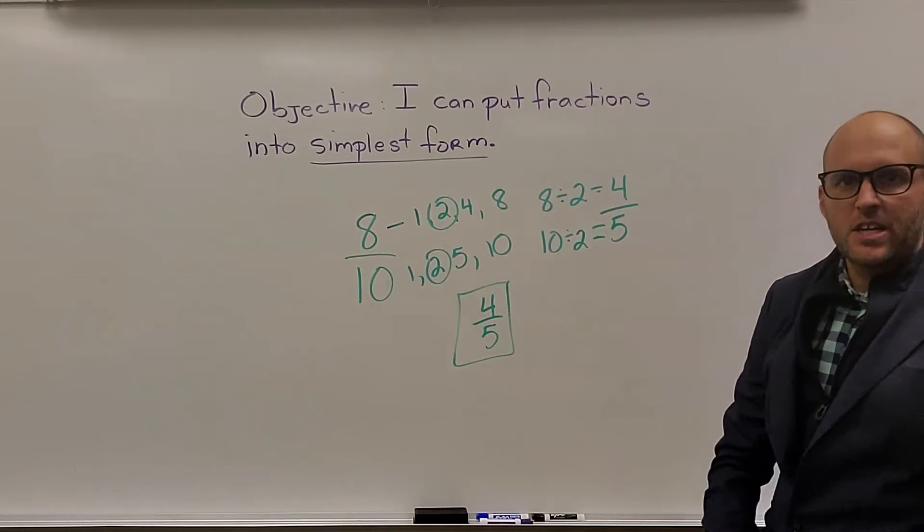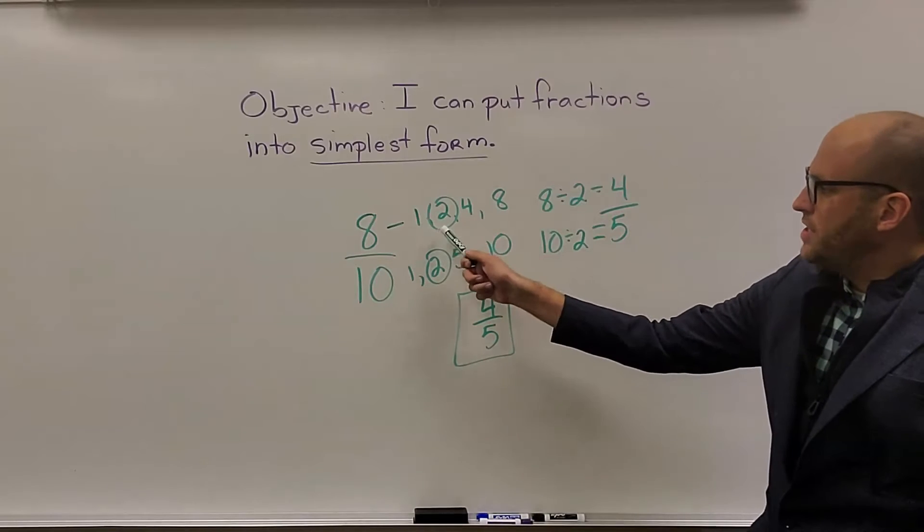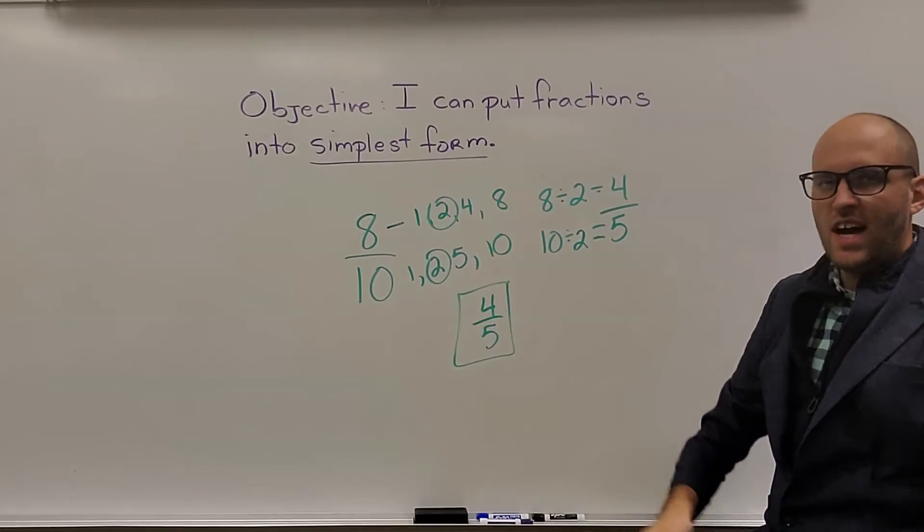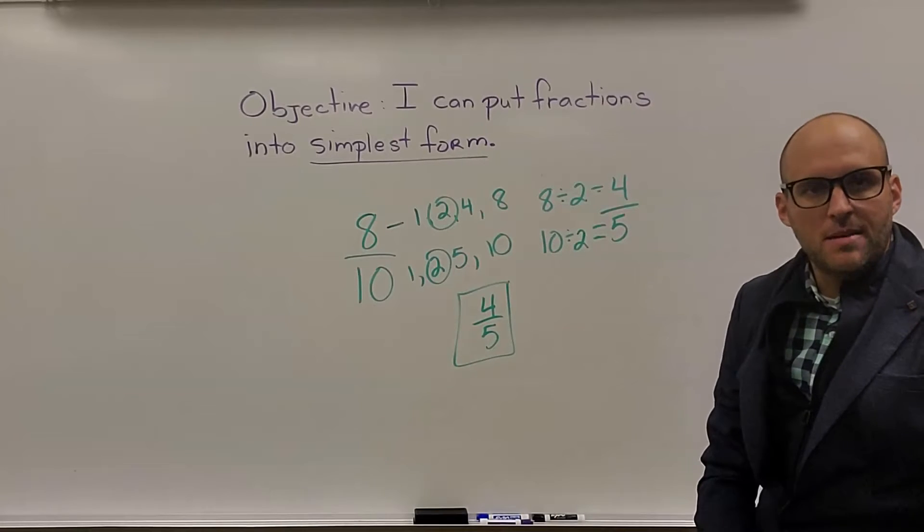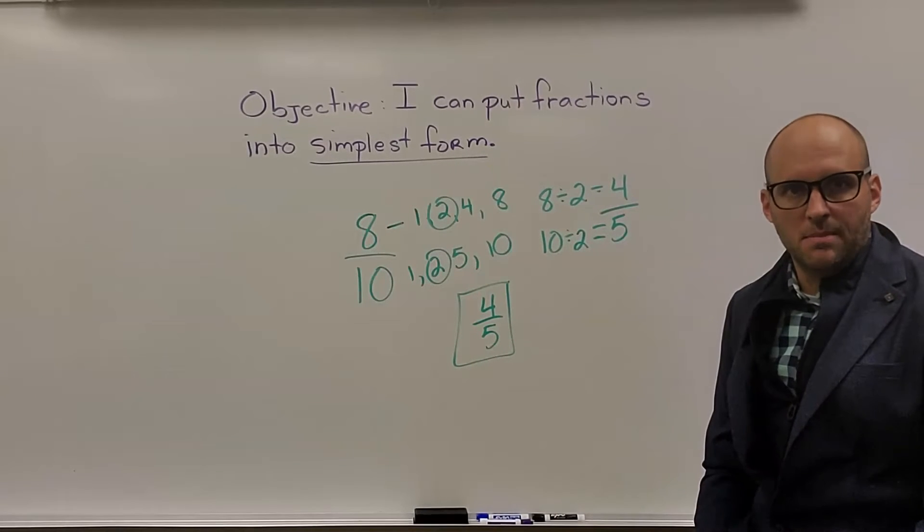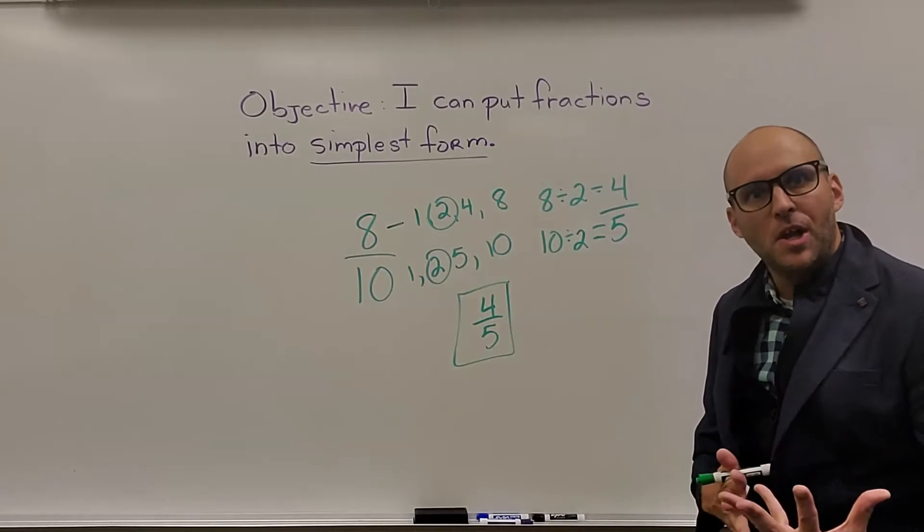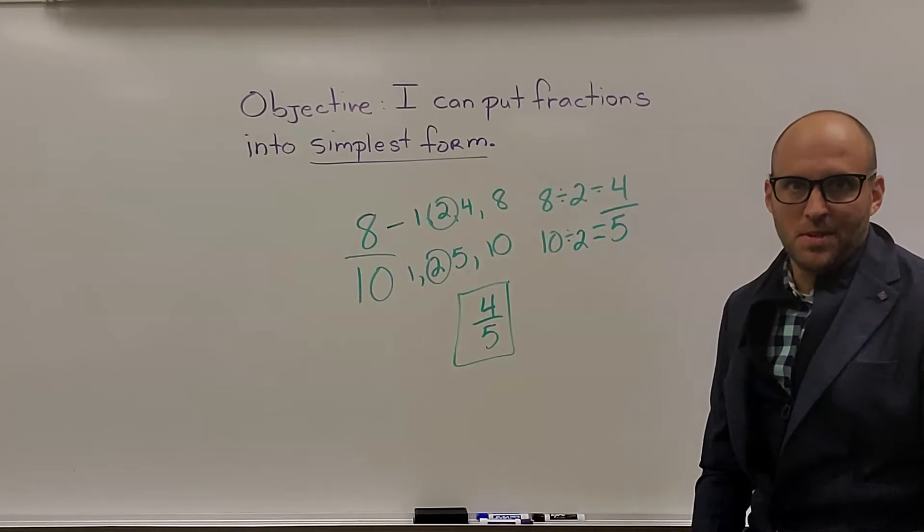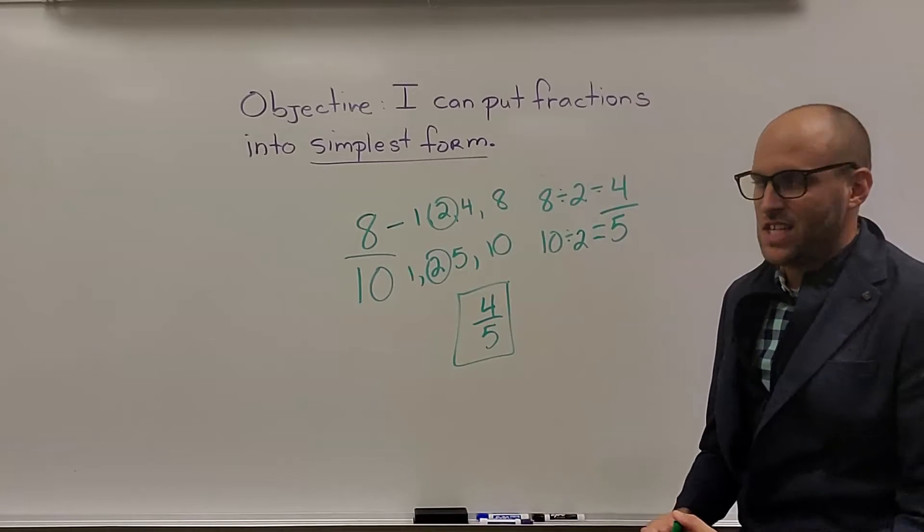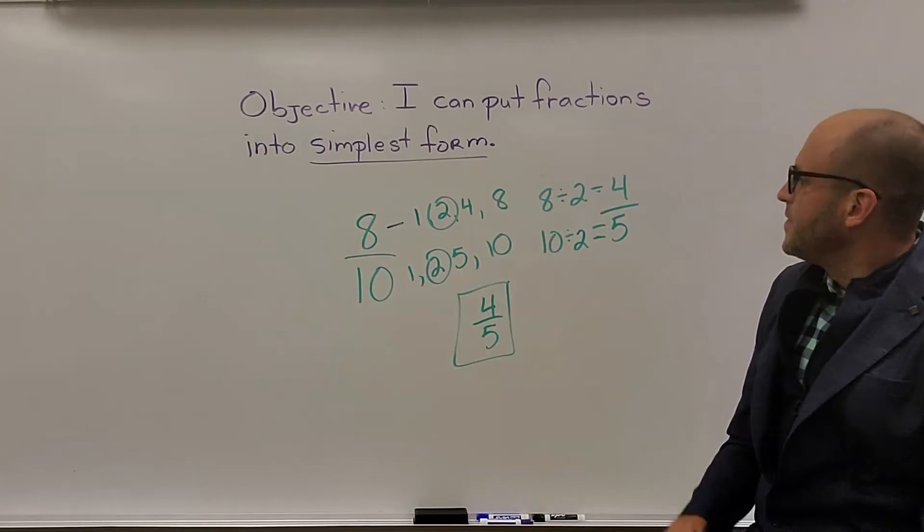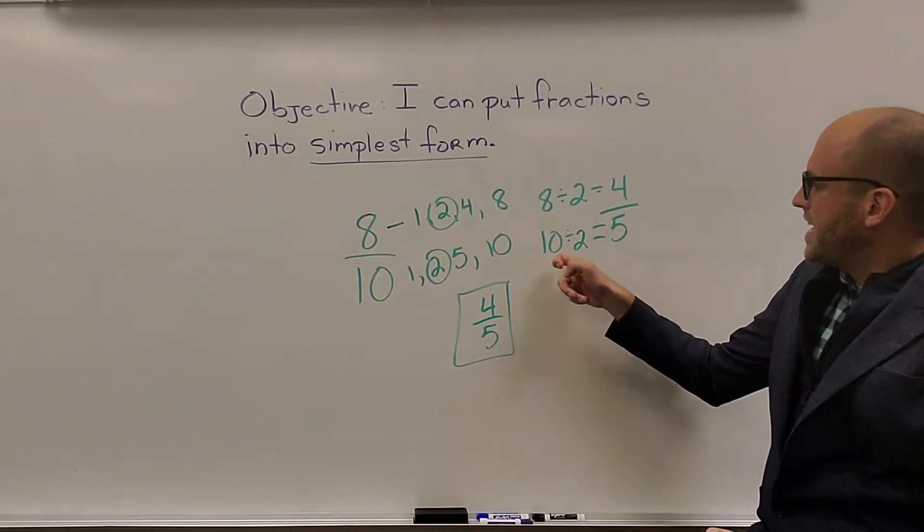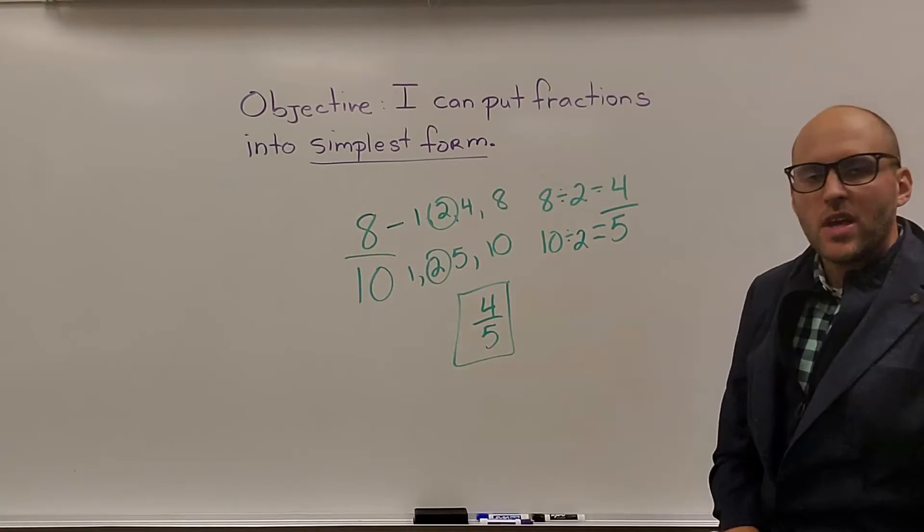So when I went through all my factors of 8, I ended up with 1, 2, 4, and 8. All the factors of 10, 1 times 10, 2 times 5. Knowing the factors of a number, knowing what multiplies by each other is really going to help you with simplest form. The better you know your multiplication facts again, in and out, notice knowing multiplication facts is a big thing that keeps coming up over and over again all year in these videos, will help you with this. So then we divide 8 divided by 2, which is 4, 10 divided by 2, which is 5, 4 fifths.